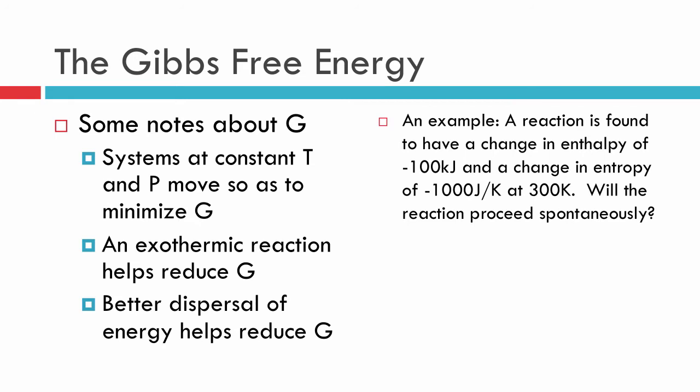Here's an example real quick of just how you would play around with this equation. What if we had an enthalpy change of negative 100 kilojoules and an entropy change of minus 1000 joules per kelvin, and we're at 300 kelvin? The question is, will the reaction proceed spontaneously under these conditions? So we just plug it in: minus 100 kilojoules minus 300 K, and then minus 1000 joules per kelvin. Here's an important note for you.